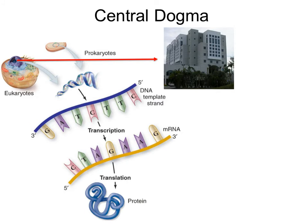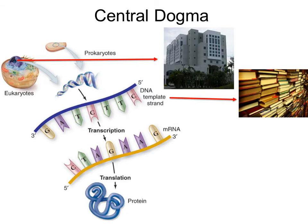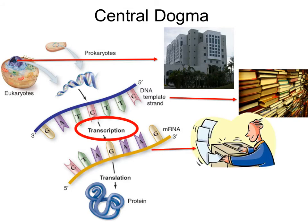We can think of the nucleus as the library of the cell — all the information that cell needs is inside that library. The DNA is like the books inside that library, containing all the recipes and instructions the cell needs to make its proteins. If you're a eukaryote, that information never leaves the nucleus, just as those books stay inside the library. You don't want to damage those books, because the DNA is the cell's only source of information and must be passed on intact to daughter cells.